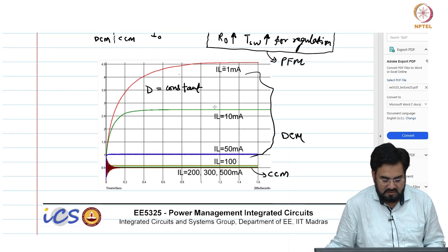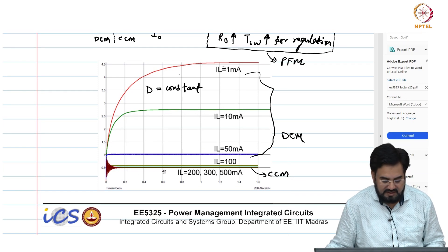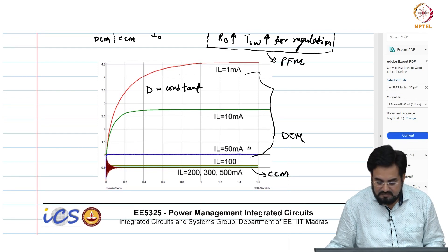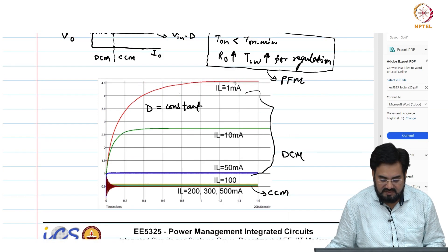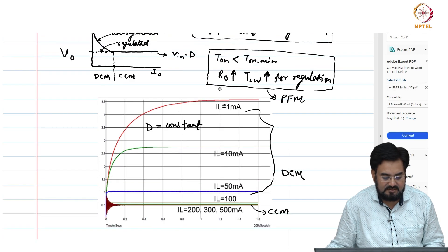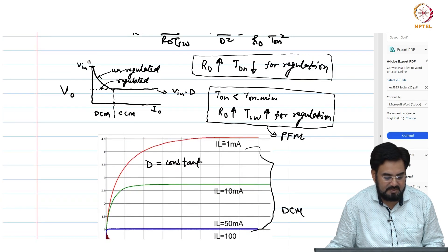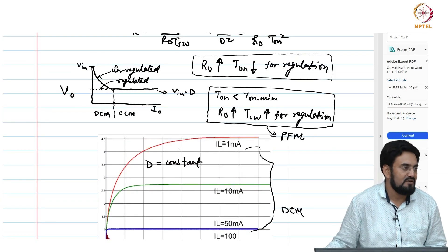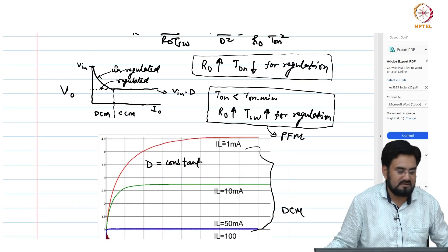It is almost 2.7 volts at 10 milliamp, although I was regulating at 0.5 volt output. When you go to 50 milliamp, it is 1 volt, and at 1 milliamp — which is a very light load — you can see 4.5 volts. If you further reduce the load, it will start approaching V_DD or V_M.